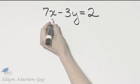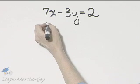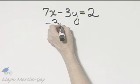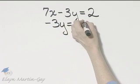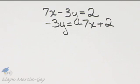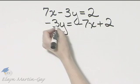So I'll begin by subtracting 7x from both sides. Now I'll let you subtract 7x. Take your time and show your work. You'll have negative 3y equals negative 7x plus 2 by subtracting 7x from both sides.